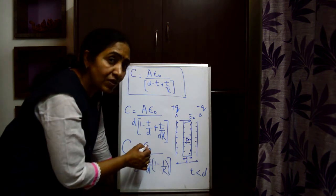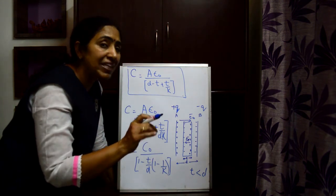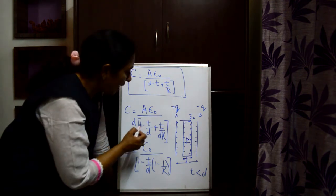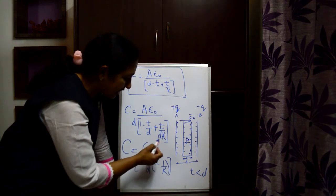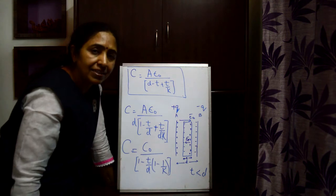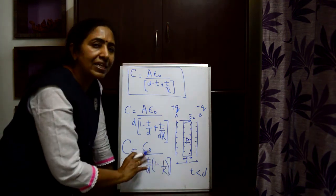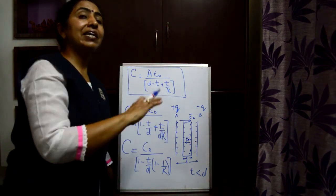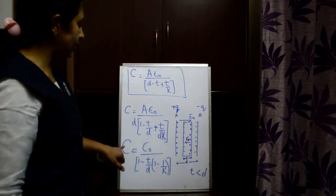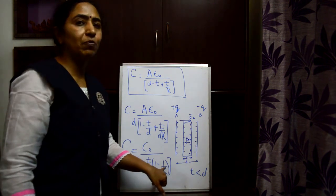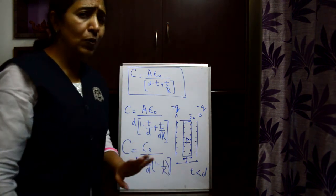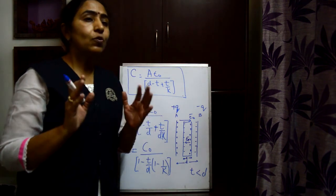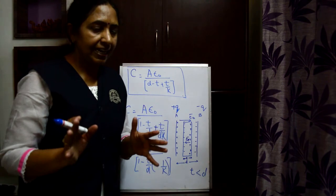So in this video we have learnt about the parallel plate capacitor — its principle, the expression for capacitance with air or vacuum C equals epsilon naught A by D, with a full dielectric C equals K epsilon naught A by D, and when partially filled with dielectric. Please go through it thoroughly, learn it, and take care. Thank you.